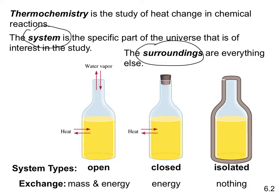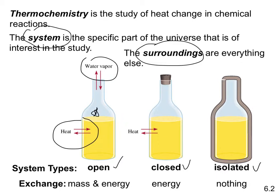There are three types of systems. An open system is one in which both mass and energy can be exchanged with the surroundings — heat and water vapor can both flow freely in and out. A closed system is one in which only energy is exchanged with the surroundings; a cork on the flask means nothing enters or leaves except heat.